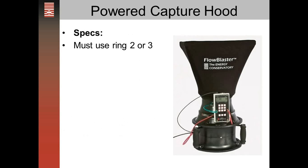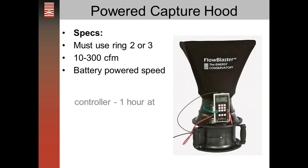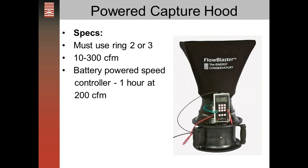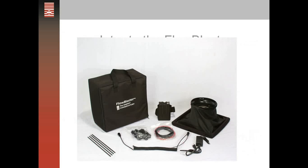You must use ring two or three, which gives you a flow range from about 10 CFM up to 300 CFM. It includes a battery-powered speed controller that gives you about an hour at 200 CFM, and longer than that at lower airflows. It weighs a total of about 12 pounds including the duct blaster fan. The inside dimensions of the hood are about 16 by 16 inches, and outside dimensions about 17 by 17.